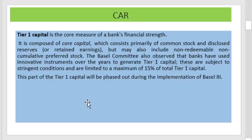Tier 1 capital is the core measure of a bank's financial strength. It comprises core capital, which consists of common stock and disclosed reserves or retained earnings, but may also include non-redeemable, non-cumulative preferred stocks. The Basel Committee observed that banks have used innovative instruments over the years to generate Tier 1 capital. These are subject to stringent conditions and are limited to a maximum of 15% of total Tier 1 capital.